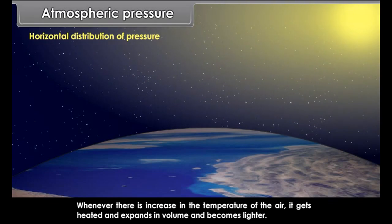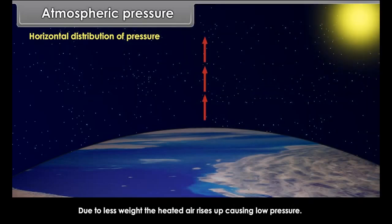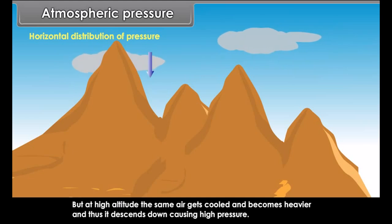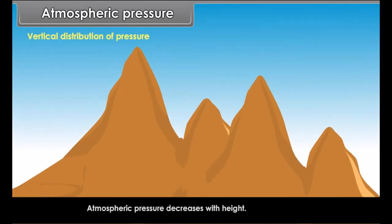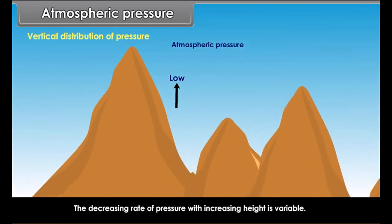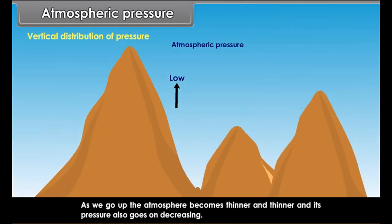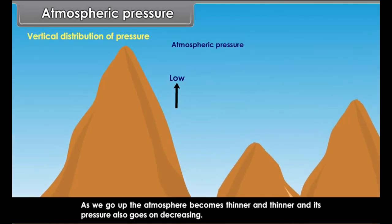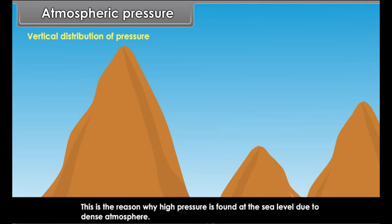Conduction is the process by which heat is transferred to matter by molecular activities. When the lower layer of the atmosphere, which is in touch with the ground, comes in contact with the upper layer, the heat particles move from lower to the upper layer. Atmospheric pressure is defined as the pressure exerted by the weight of the air on the Earth's surface. The atmospheric pressure can be measured by an instrument called a barometer. The normal atmospheric pressure at sea level is about 76 cm of the mercury column in the barometer.